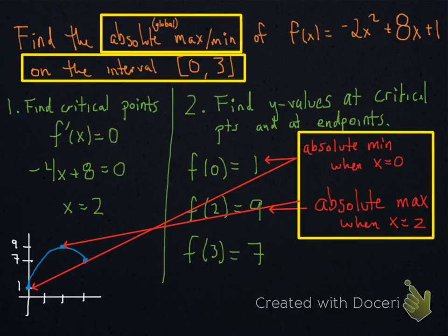What you just saw was how to find absolute or global max of a function on an interval. As you noticed, it was a little different. We saw this one in class also. You don't have to make a number line for this one. You just have to find the y values at the critical points and the end points.